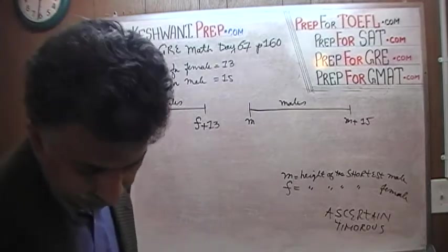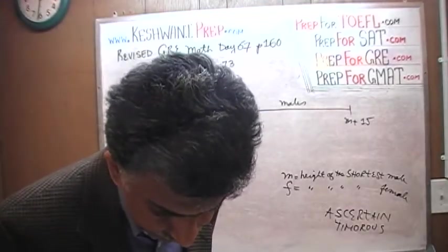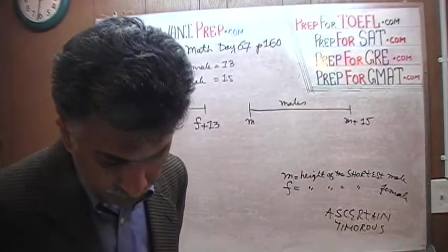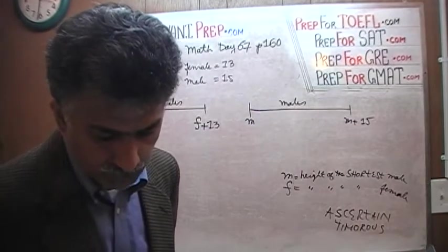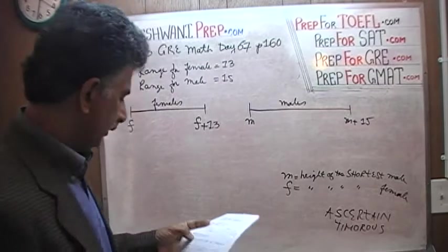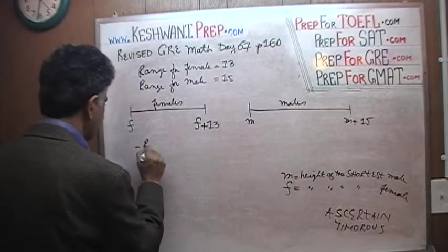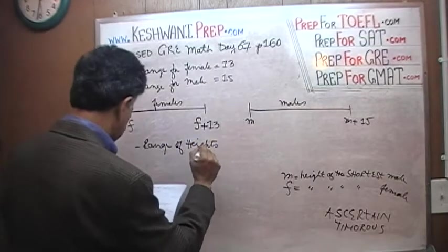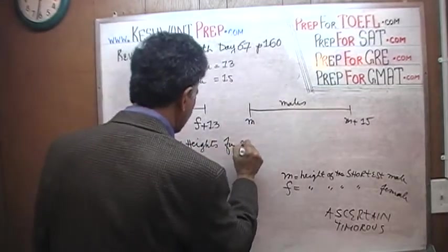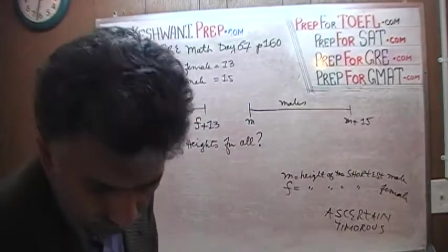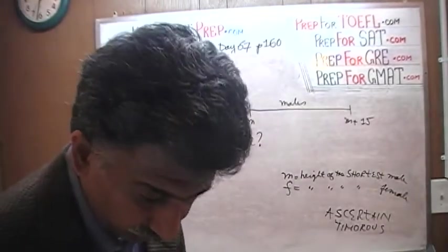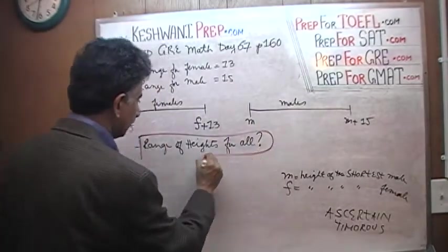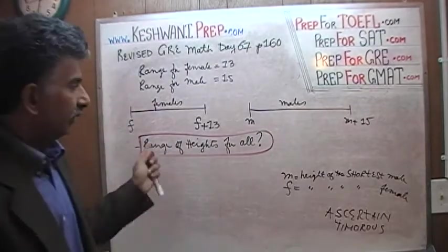The question is, what is the range? Which of the following statements individually provides sufficient additional information to determine the range of the heights of all students in the class? We are looking for the range of heights for all. That's a very simple straightforward question. Whether or not the answer is going to be straightforward or simple to find is a different story.